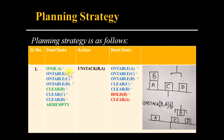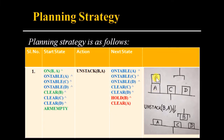The planning strategy is the sequence of actions by which we move from the initial state to the goal state. Here we use a forward planning strategy — we start from the initial state and move toward the goal state. First, we perform Unstack(B,A). The preconditions On(B,A), Clear(B), and Arm-empty are all true, so we can perform this operation. The effect is Holding(B) and Clear(A), which becomes the next state.